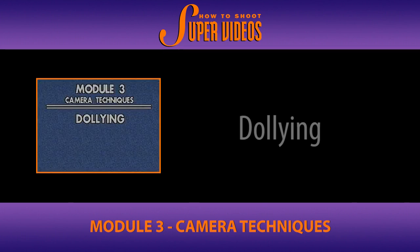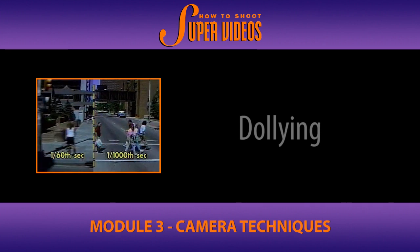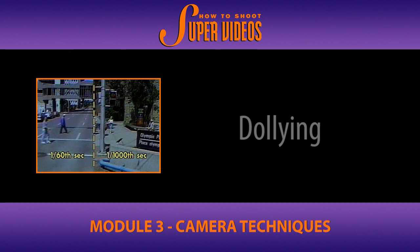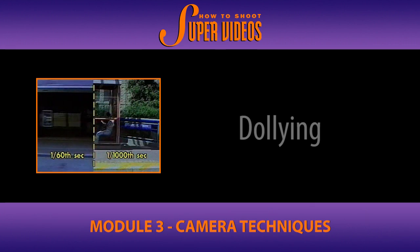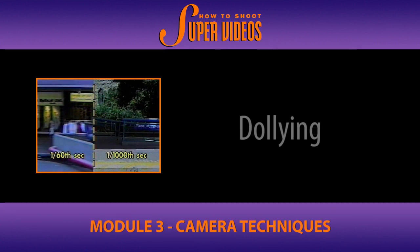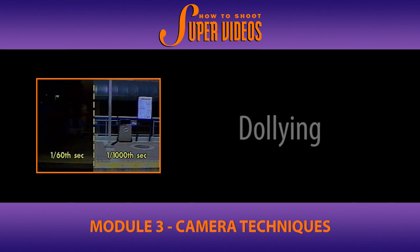Here's a tip: set your camera to high-speed shutter when shooting from a moving vehicle. This produces clearer images, which are easier on the viewer's eyes. This side-by-side comparison illustrates the improvement with high-speed shutter.